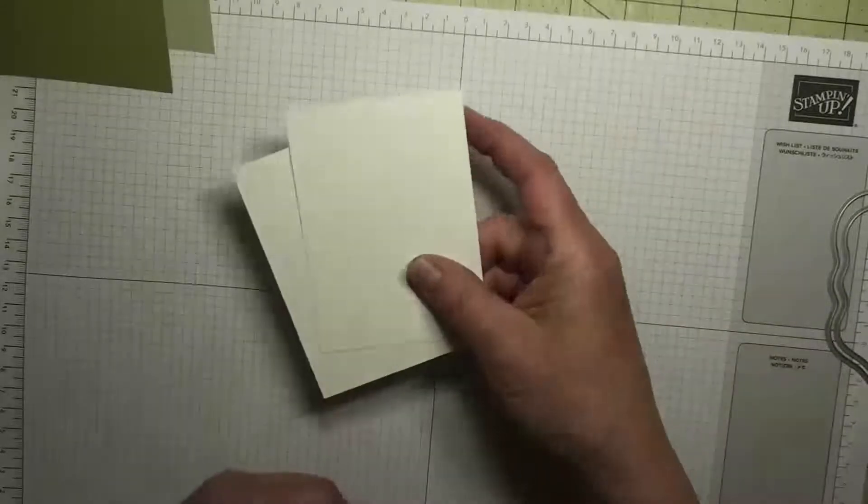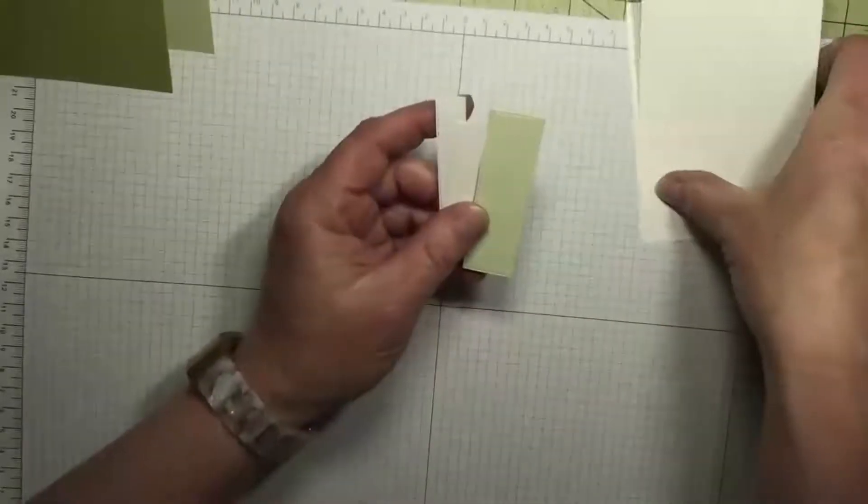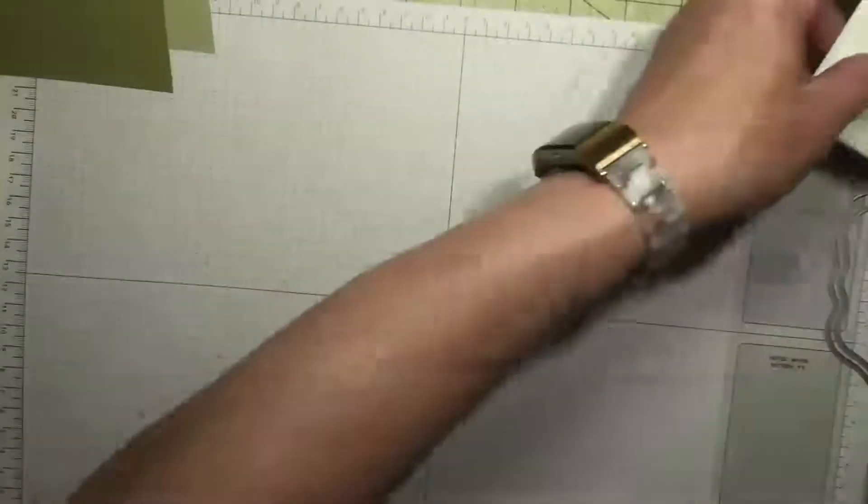We have some ribbon. We have two pieces of basic white scrap paper pieces to stamp on and we've got some other pieces here from our rectangular stitch rectangles that we need.